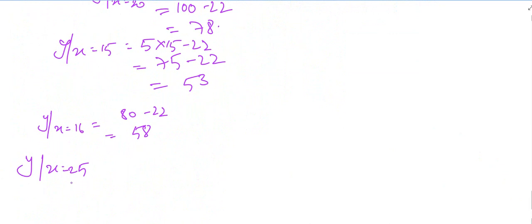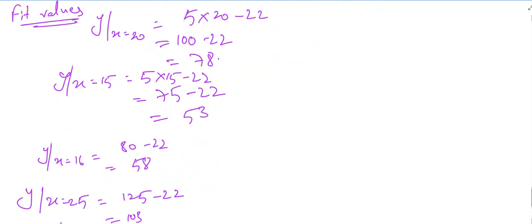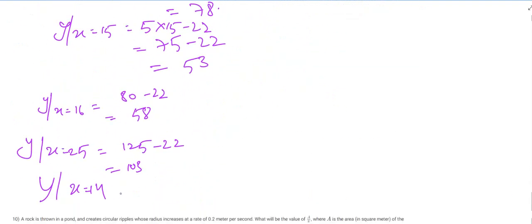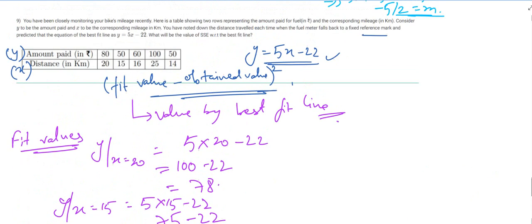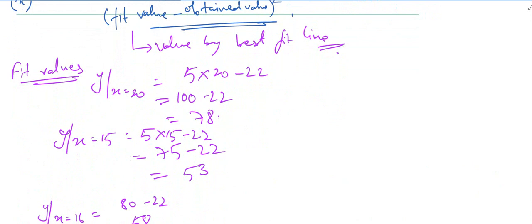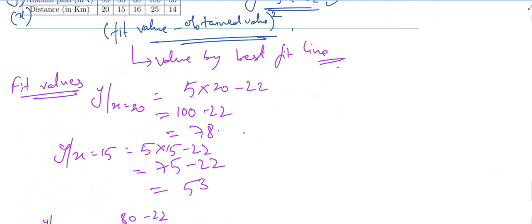When x equals 25: y equals 5 times 25 minus 22, which is 125 minus 22 equals 103. When x equals 14: y equals 70 minus 22 equals 48. We now have all the fit values.